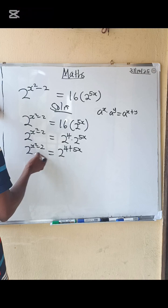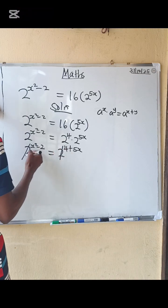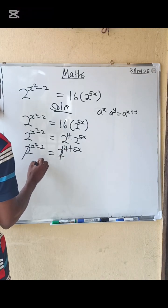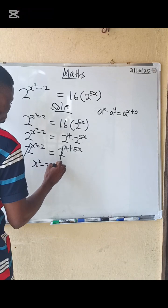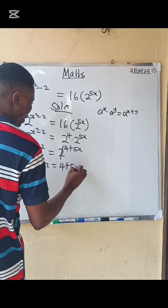So what happens? They are of the same base. We now equate the powers. So x squared minus 2 equals to 4 plus 5x.